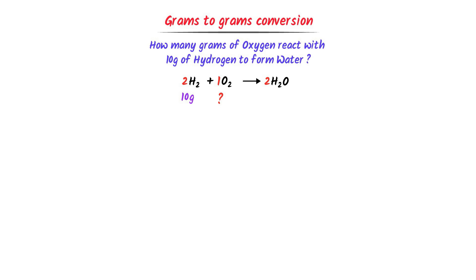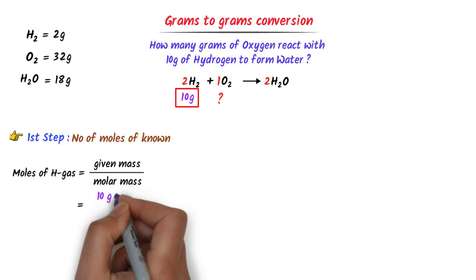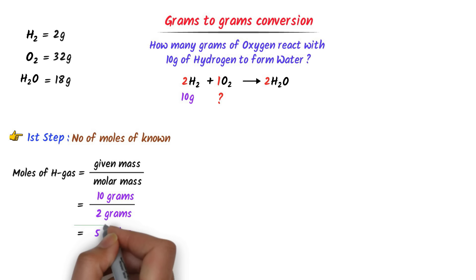I need to find the molar masses: hydrogen gas is 2 g/mol, oxygen gas is 32 g/mol, and H₂O is 18 g/mol. I follow 3 steps. In the first step, I find the number of moles of the known species, hydrogen gas: moles = given mass ÷ molar mass = 10 ÷ 2 = 5 moles of hydrogen gas. So 10 grams = 5 moles of hydrogen gas react with x grams of oxygen.